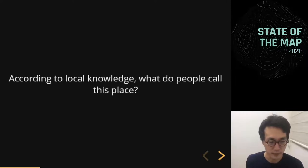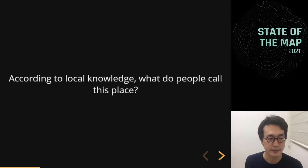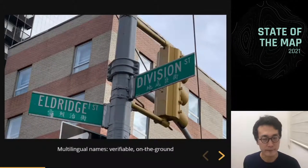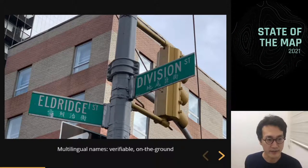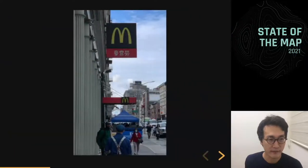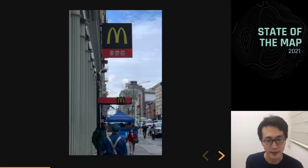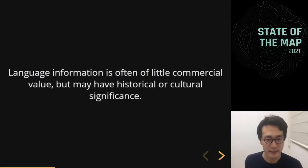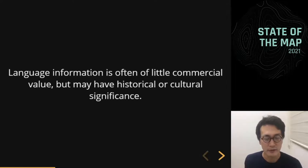This goes back to the unique idea behind OpenStreetMap, which is about local knowledge and what people call a place. For example, in Chinatown in New York City, there are official and verifiable on-the-ground names in both Chinese and English for streets. That also applies to POIs — this McDonald's has all of its signage in Chinese. So it's not only in places in Europe and Asia that have multilingual tags — they're in the U.S. too. It's a really unique aspect of OSM because there's not a lot of people who believe this data has great commercial value, but in many cases it has historical or cultural significance.